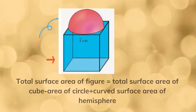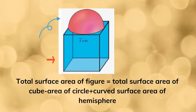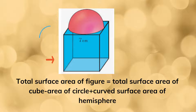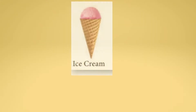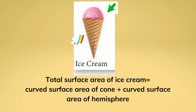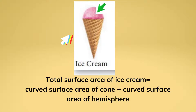Look at the next figure — it is made up of a cube and a hemisphere. So the total surface area of the figure is equal to the total surface area of the cube minus the area of the circle, plus the curved surface area of the hemisphere.